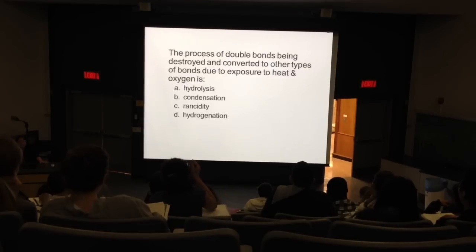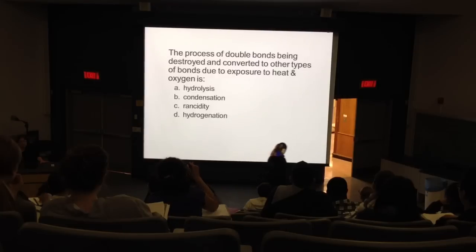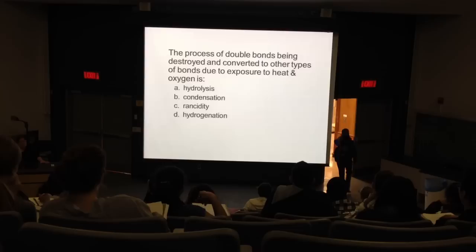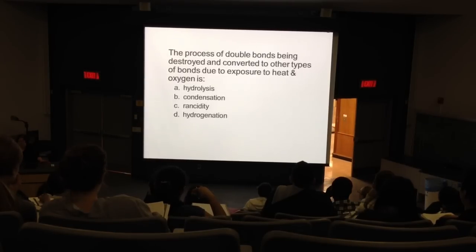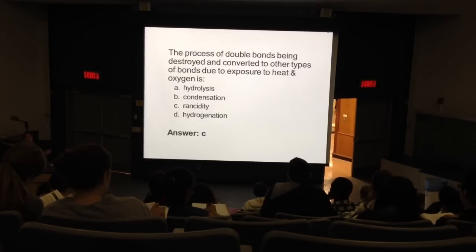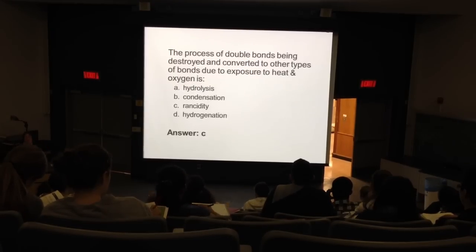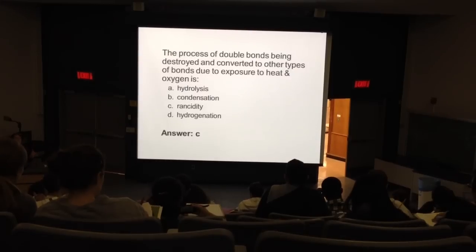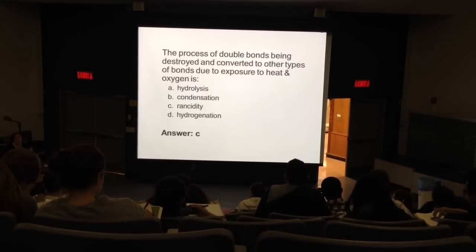The process of double bonds being destroyed and converted to other types of bonds due to exposure to heat and oxygen is called rancidity. That's the breakdown of fats, mainly polyunsaturated, because the site of the double bond is most vulnerable. Particularly polyunsaturated fats, because they have two or more double bonds.